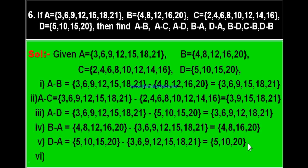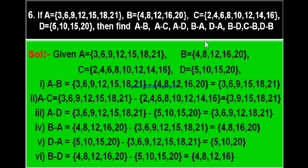Sixth part: B minus D. Set B = {4, 8, 12, 16, 20} minus set D = {5, 10, 15, 20}. The common element is 20 — cancel it. What remains in B is {4, 8, 12, 16}. Therefore B minus D equals {4, 8, 12, 16}. Like this you can complete Exercise 2.2.